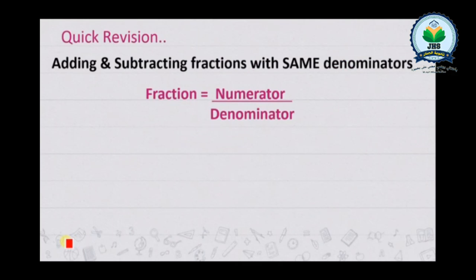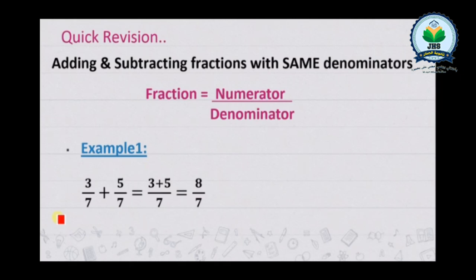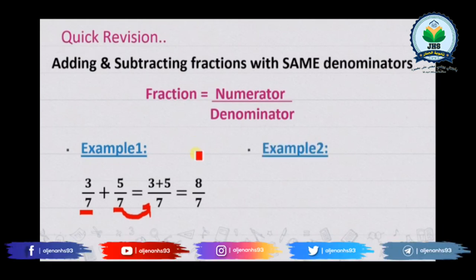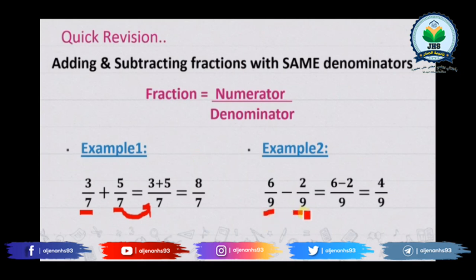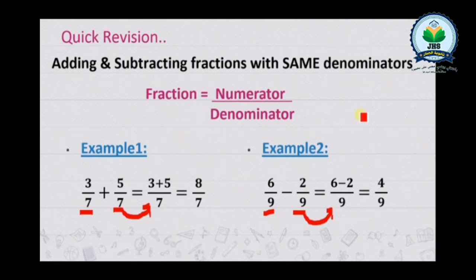As we learned before, a fraction is equal to numerator over denominator. Example one: three over seven plus five over seven. Here we have the same denominator, so we write seven, then we add three plus five, so we obtain eight over seven. Example two: six over nine minus two over nine. We have the same denominator nine, so we write nine, then we subtract six minus two, so we obtain four over nine.